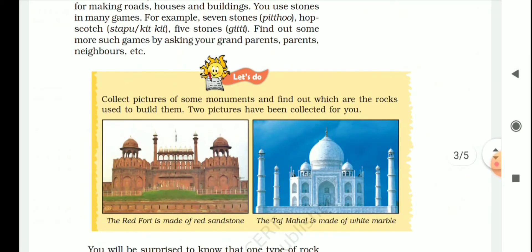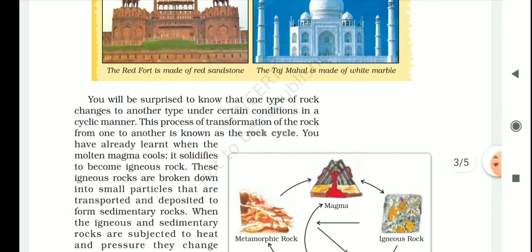You will see two pictures in this figure. One is Red Fort and one is Taj Mahal. Red Fort, which is made from stone, it is made from Sandstone. The Taj Mahal is made from White Marble. What is White Marble and Sandstone? What is it? Types of Rocks.